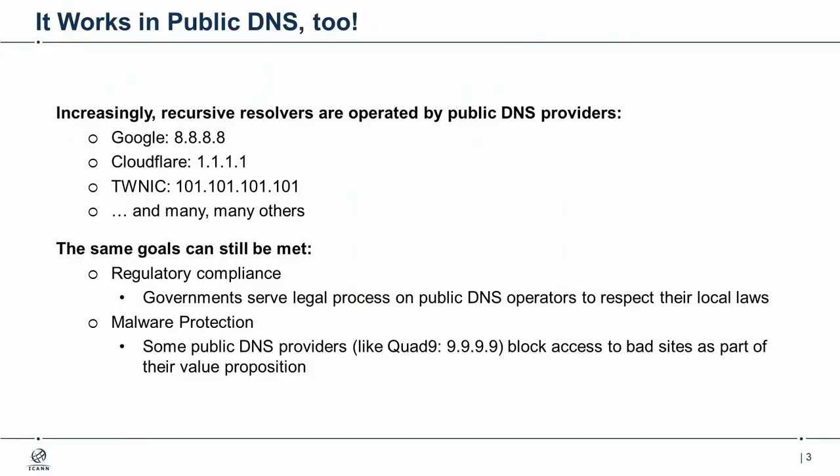This model works. Governments can still serve legal process on public DNS operators, and they abide by it. For malware protection — we're going to hear in a little bit from Quad9. John Todd is here to talk about Quad9. Malware protection is actually a value offering for Quad9; they purposely block sites so that you can't go there when you set it as your recursive resolver, and this is a good thing.